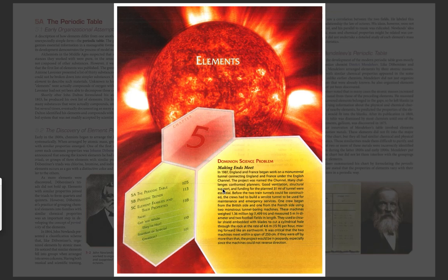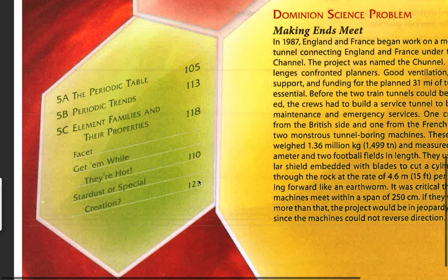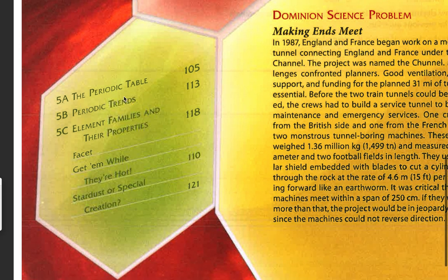Just really quick as we do, let's look at the sections of Chapter 5. First, section 5A covers the periodic table, periodic trends, and the properties of elements in the families.